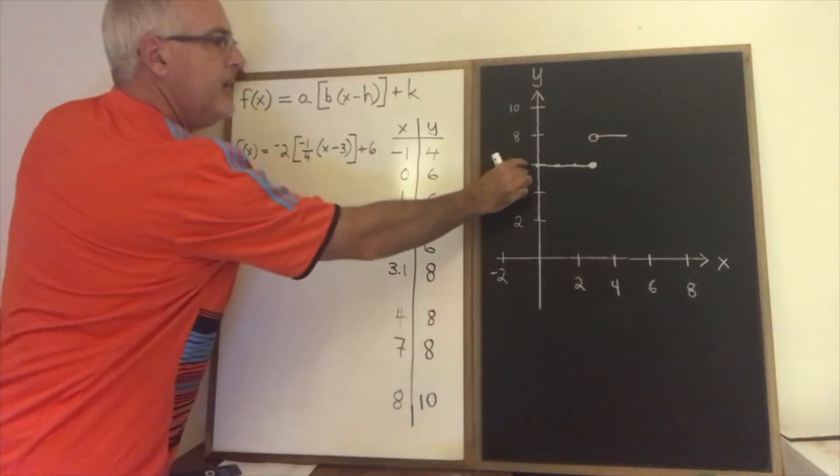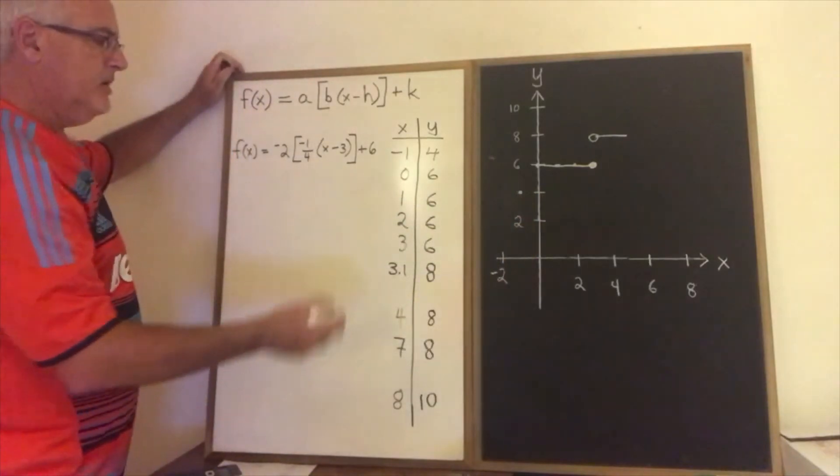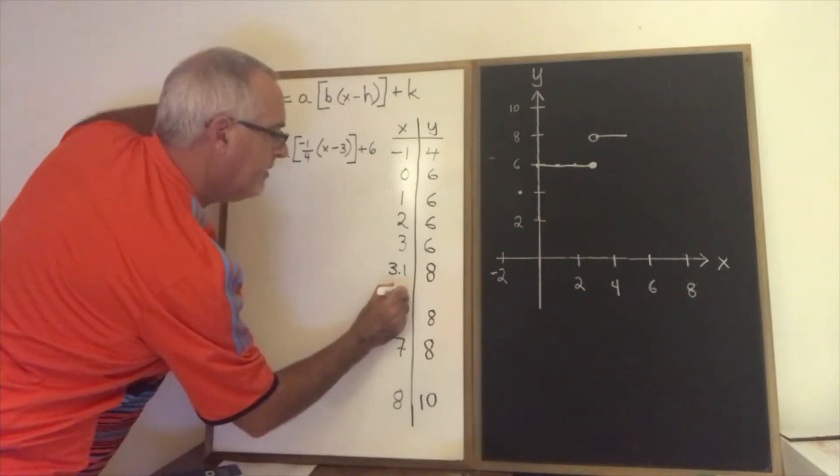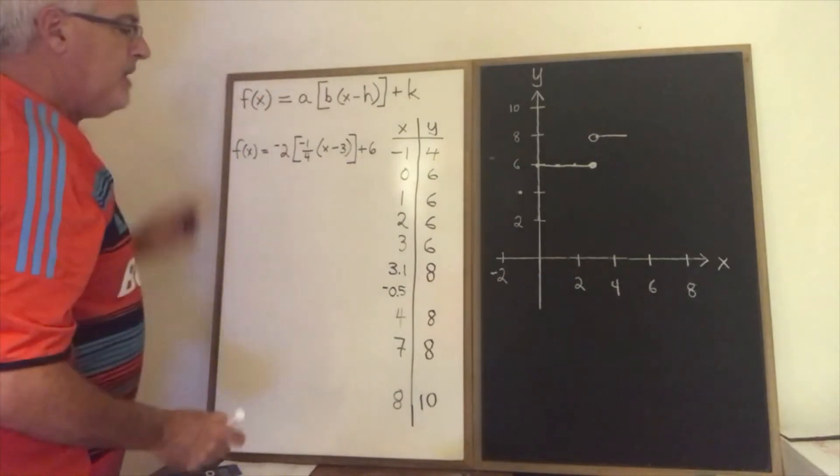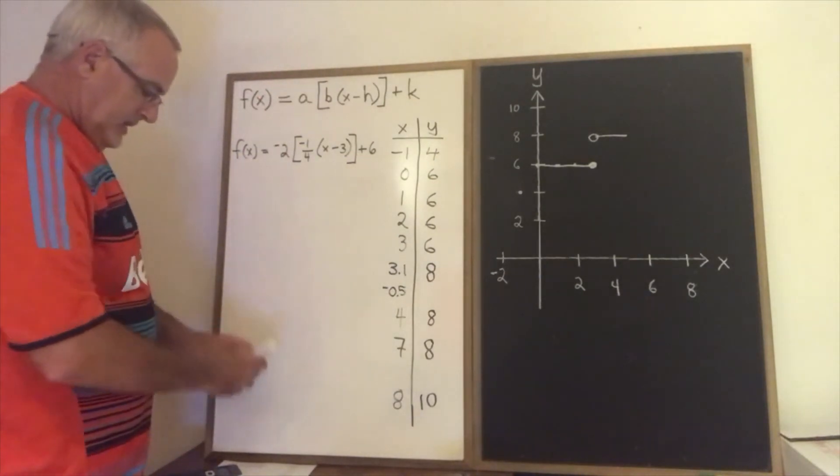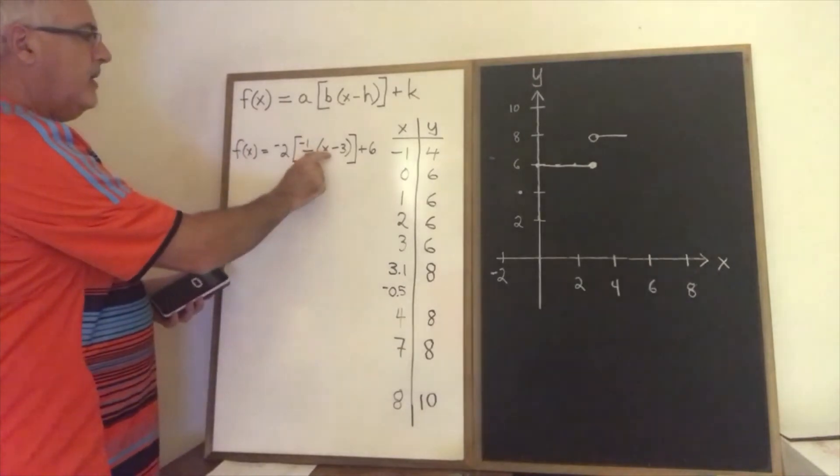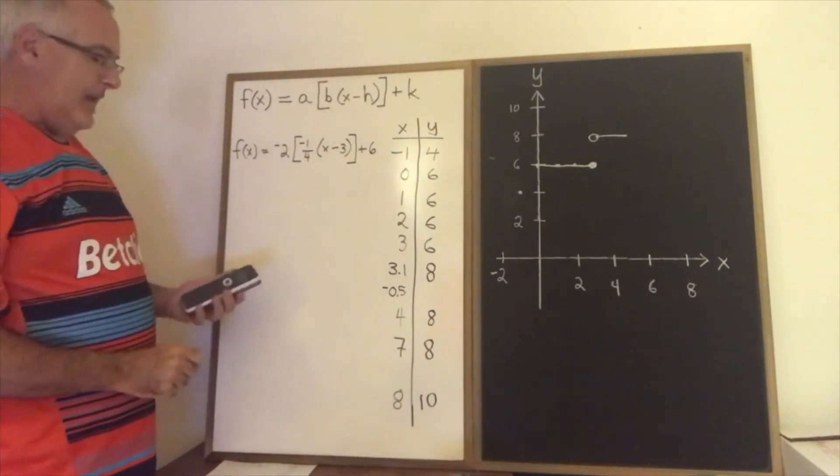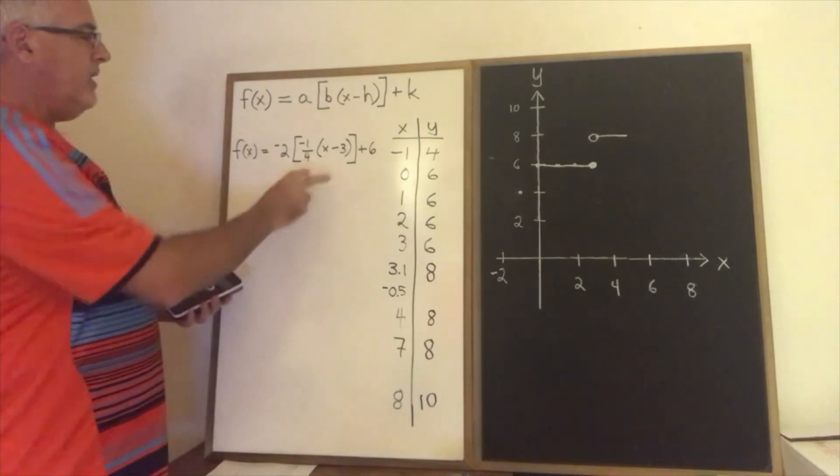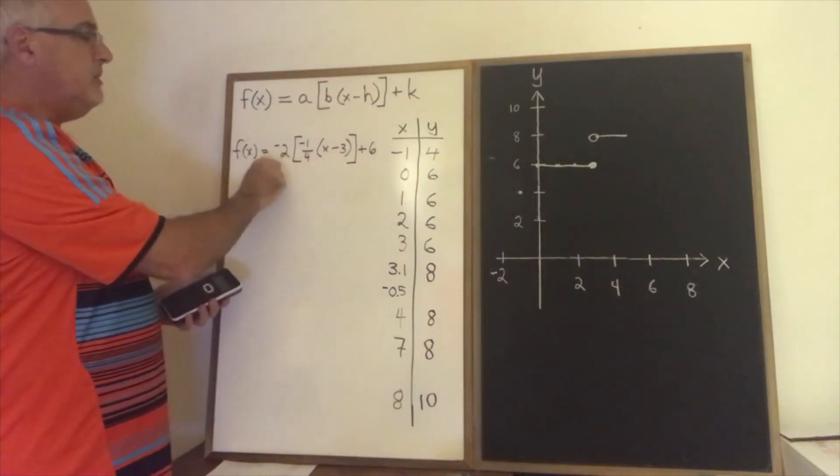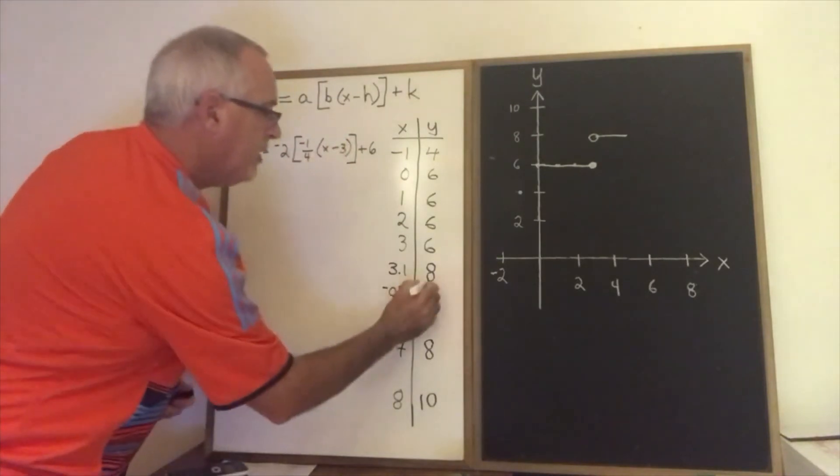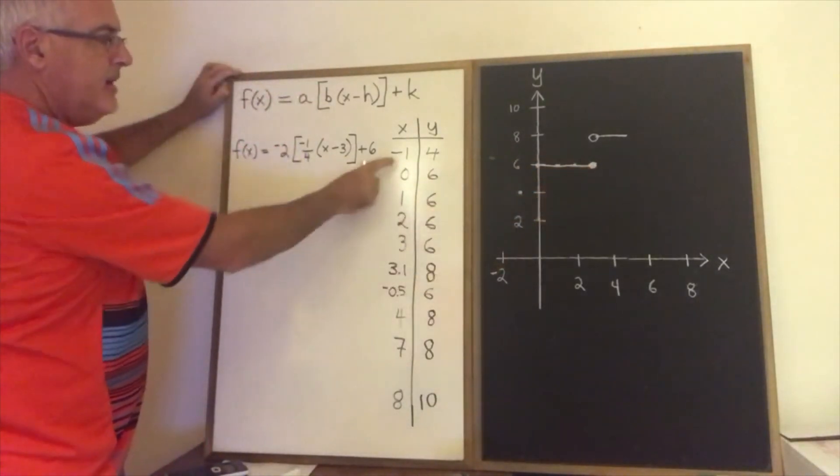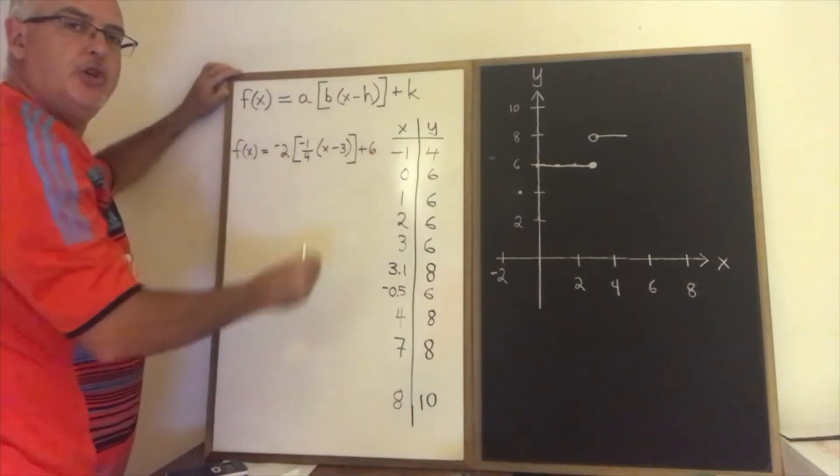I want to see what's happening here in between x equals negative 1 and x equals 0. So I'm going to put into this space in the table negative 0.5, negative a half. Yes it's not arranged in the place you'd expect to see it, but I'm going to plunk it in there in the table. Negative 0.5 minus 3 is negative 3.5. Negative 3.5 times negative a quarter is positive 7 eighths or positive 0.875. The greatest integer to the left of that on the number line is 0. 0 times negative 2 is 0 plus 6 is 6. We get another point with a 6. So what this is telling me now is that 3 and negative 1 are spots where we are jumping up a step.